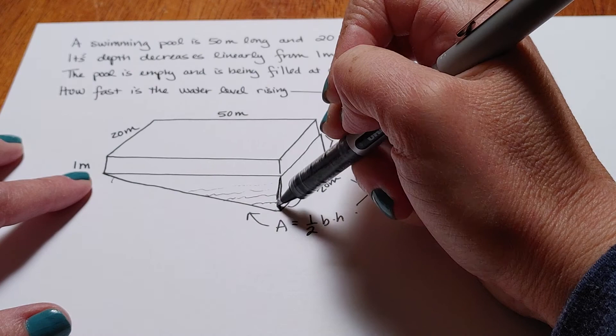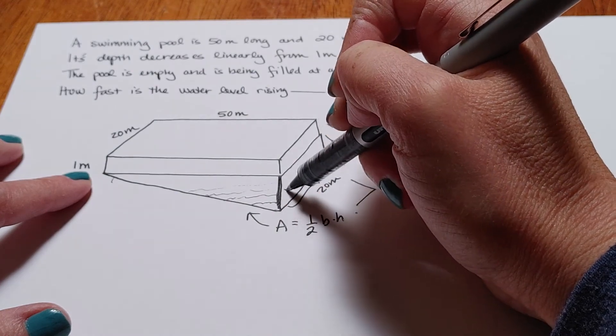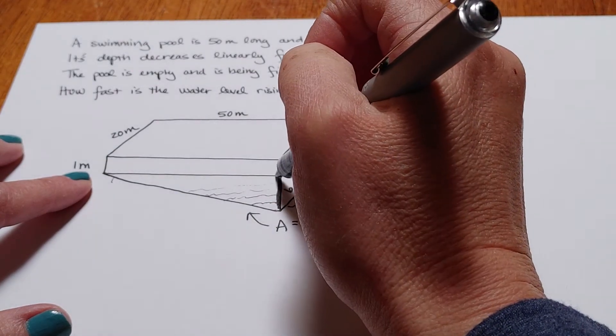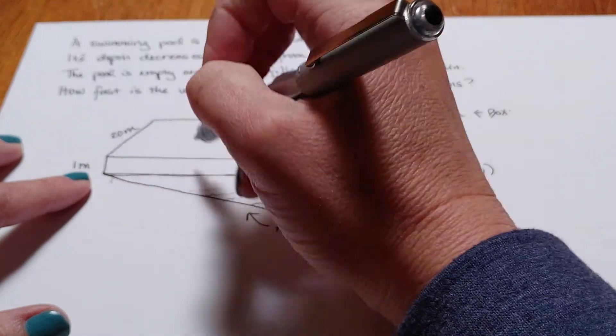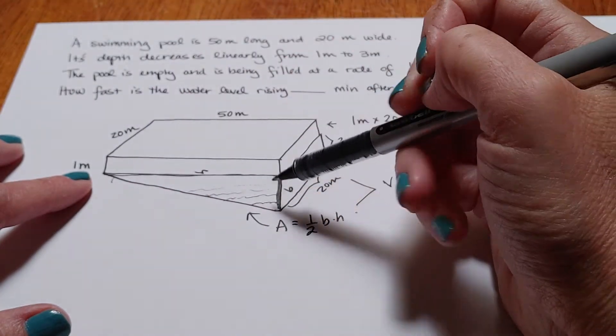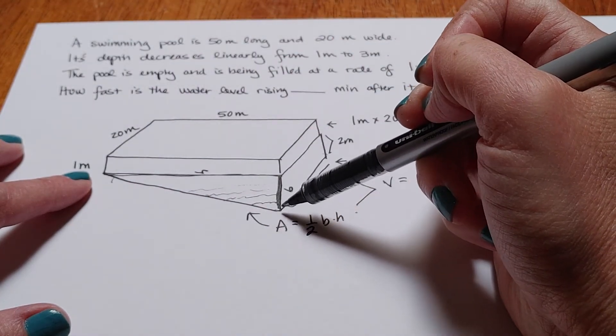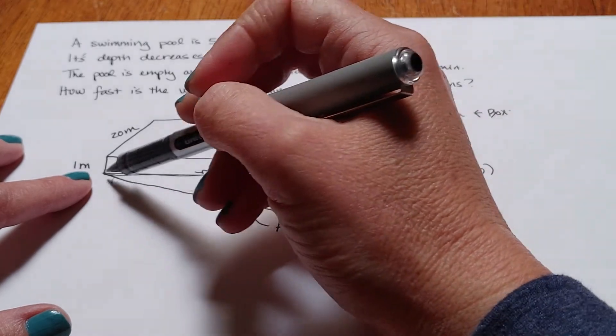Now the base would be this measurement and the height would be this one. Now, you're probably thinking, well, don't we know that the base is 2 and the height is 50?